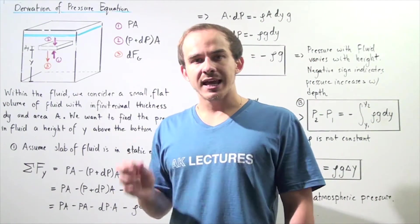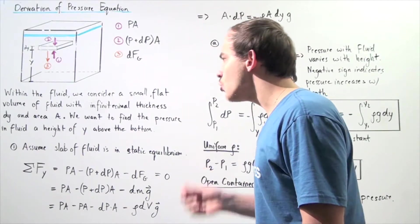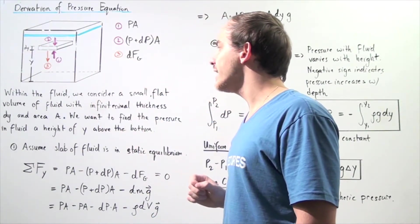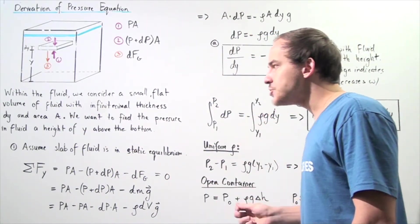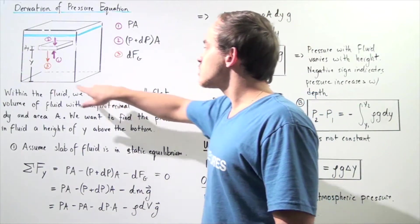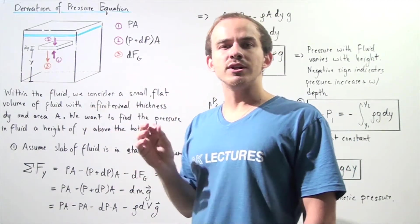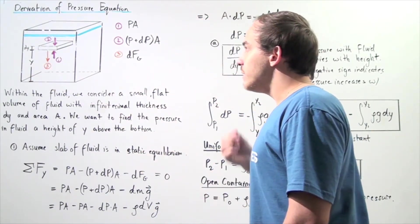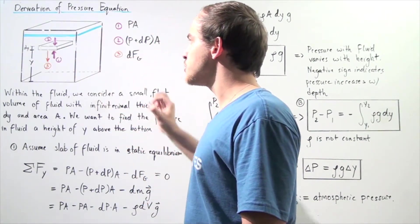We're going to use calculus. We're going to examine this fluid region and choose a small flat volume of fluid with an infinitely small distance dy and an area A. We want to find the pressure inside the fluid at a certain height y above the bottom of the container. So we begin by examining this small volume of fluid with an infinitely small thickness dy, which we consider as the height of our infinitely small volume.